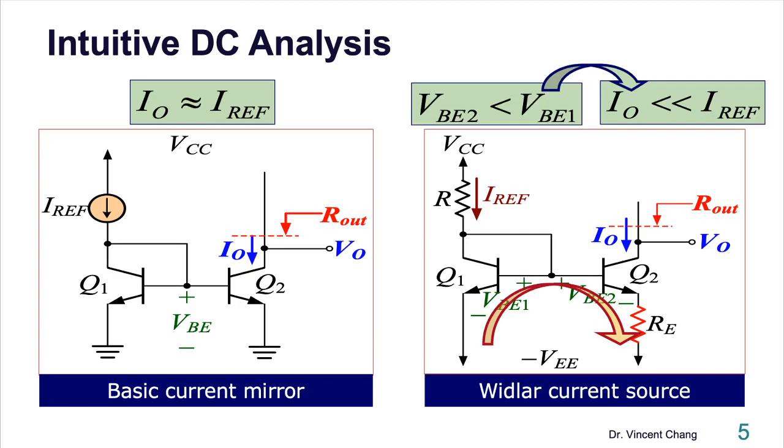First, according to Kirchhoff voltage law, VBE2 will be smaller than VBE1. Watch carefully. As long as transistor in forward active region, then the relationship between IC and the VBE will be exponential. So, therefore, even the VBE1 differs a little bit, the current will differ dramatically.